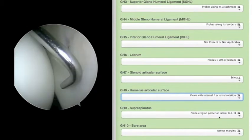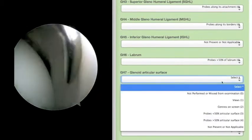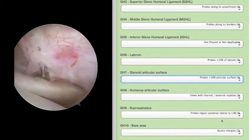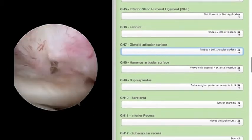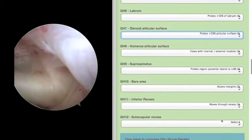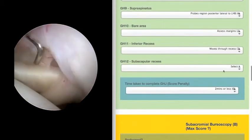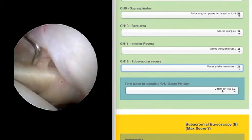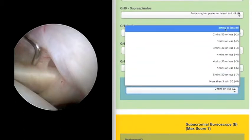Once the glenohumeral arthroscopy has been completed, the time taken is recorded. There is a maximum score for a procedure performed under two minutes, and a progressively decreasing score thereafter. If the trainee fails to make progress for 30 seconds, then the arthroscopy is stopped, and the trainer should take over.